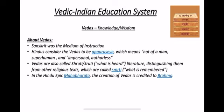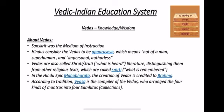In the Hindu epic Mahabharata, the creation of Vedas is credited to Brahma — it is said that the Vedas came from the mouth of Brahma. According to tradition, Vyasa is the compiler of the Vedas. It is said that while Brahma spoke them, Vyasa wrote them down and arranged the four kinds of mantras into four Samhitas.